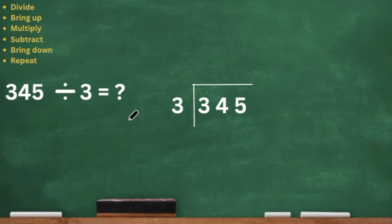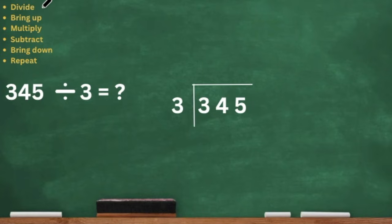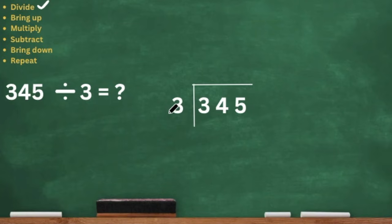So we have 345 divided by 3. We have our CFS here at the top and it says to divide, bring up, multiply, subtract, bring down, repeat. So first we're going to divide. We have 3 divided into 345. You're always supposed to take your divisor and divide it by your first digit in your dividend.